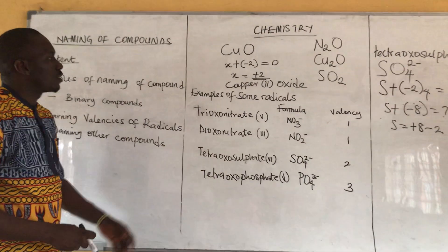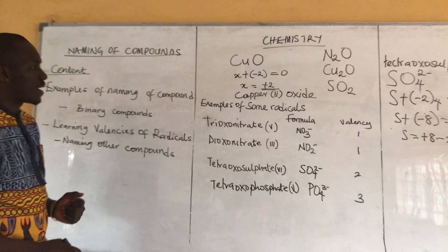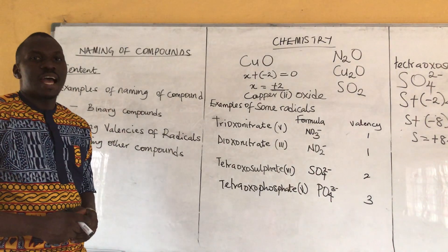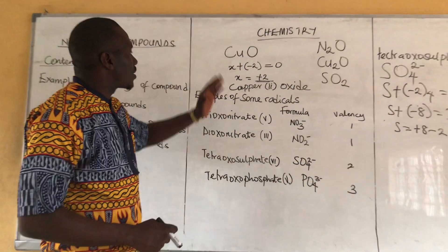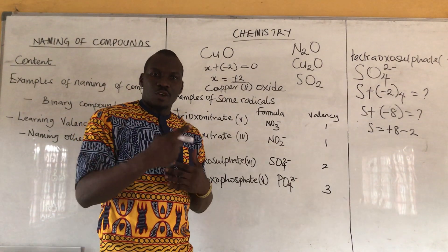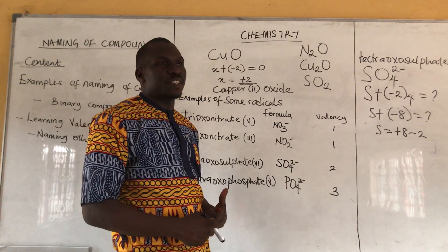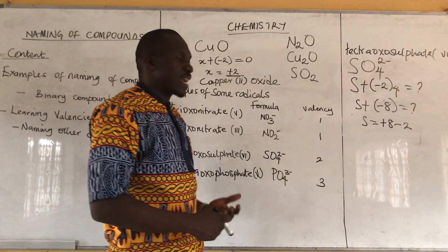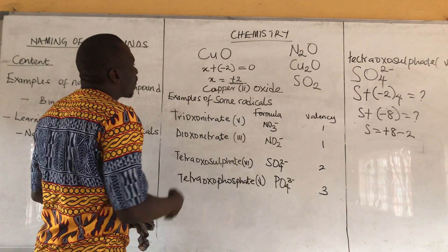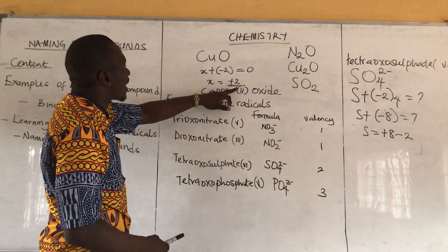I believe with this short explanation you should be able to name and write the correct formulas of your radicals. Thank you so much for watching. Please don't forget — naming of compounds is very important as a science student. In your WAEC or NECO exams, they will ask you: what is the valency of tetraoxosulfate(6)? Or: what is the oxidation state of copper in copper(2) oxide? With this process you can easily get the oxidation state.